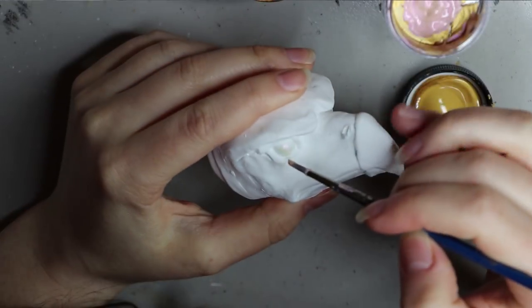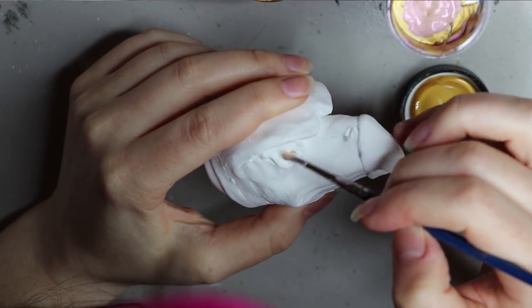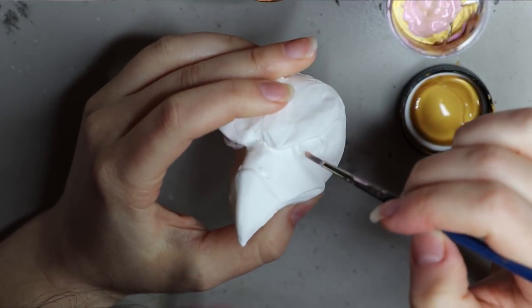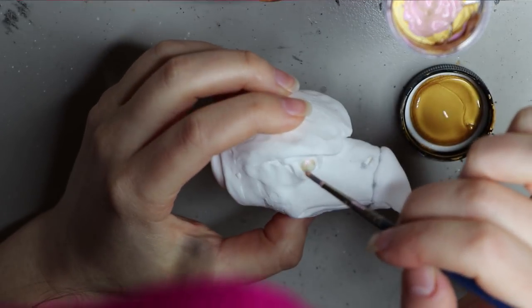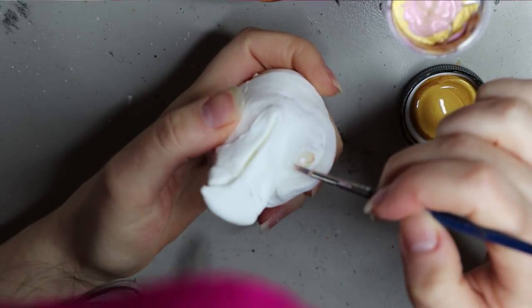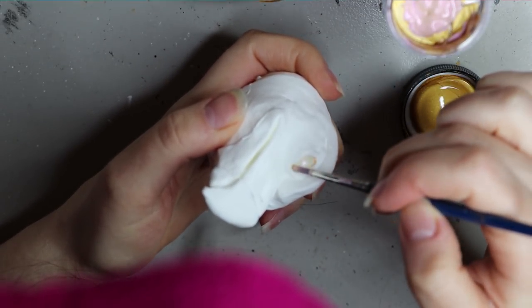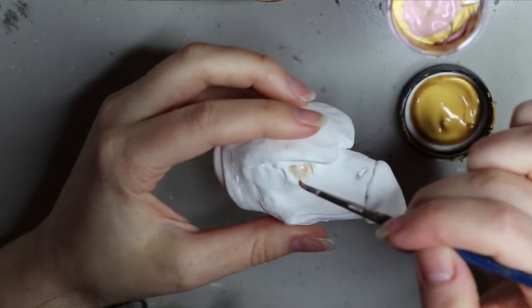This paint is going to be for the eyes. The customer wanted a kind of golden eye, and I didn't want it too dark just because I've done a lot of dark gold eyes before, so I wanted to keep this one a bit light.